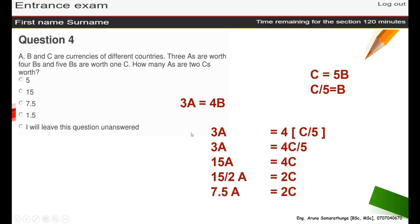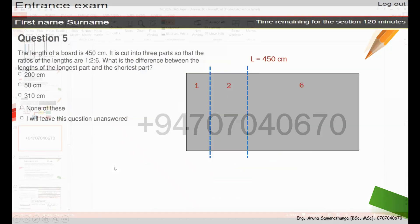They didn't give 7.5 as an answer, but be careful — some people will give the answer for one C. They ask how many A's are in two C's, so the answer is 7.5. These math questions are actually black and white — concrete answers. You have to carefully read the question. You don't need to go beyond that, and you don't need to stop before it either. The answer is 7.5.